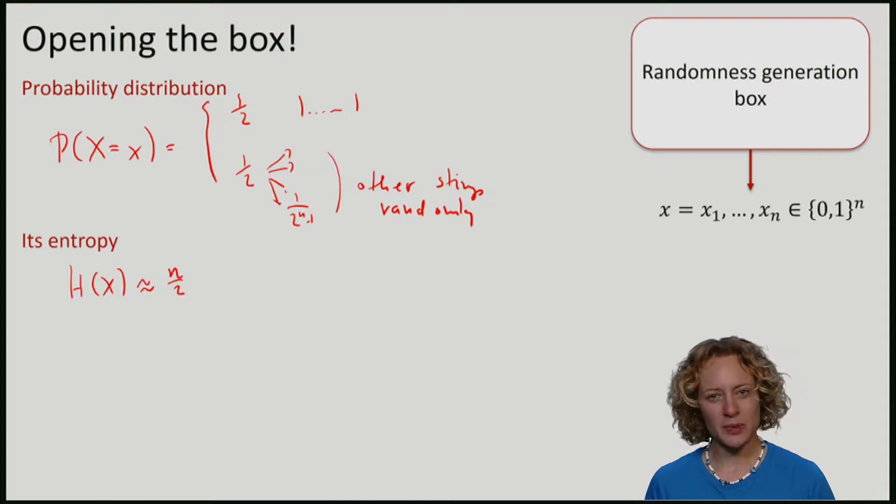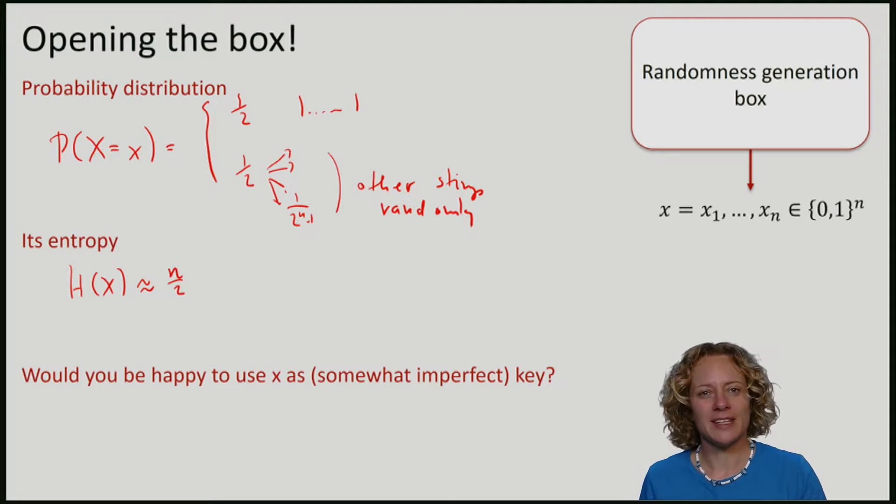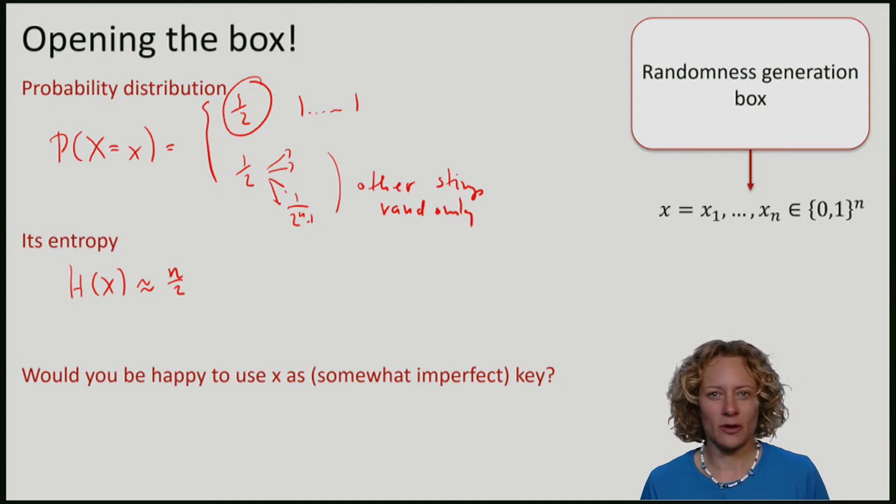The question is, would you be happy to use the string x that comes out of this box, and you only get to use this box once, as an imperfect key? Let's imagine that I'm actually an eavesdropper. I have sold you this box to produce keys, and I promised you, I gave you a guarantee that it is entropy n over 2. But note that my probability of guessing the key is a half. I will always guess that the output of the string x is 1, 1, 1, 1, 1, 1, and I will be correct with probability half, independent of the length of the string.